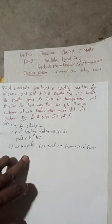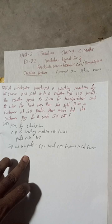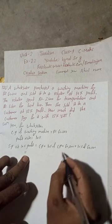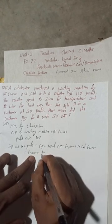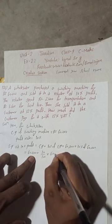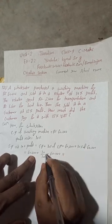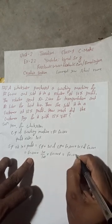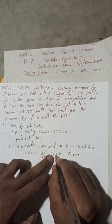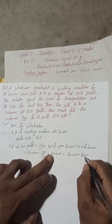So this is 60,000 plus 10 divided by 100 into 60,000. Cancelling zeros, this gives 60,000 plus 6,000. So total SP is equal to Rs 66,000. SP at 10% profit is equal to Rs 66,000.